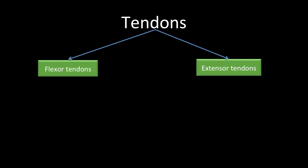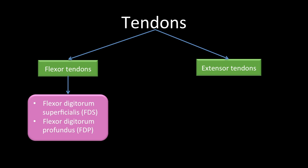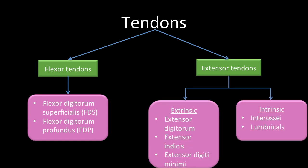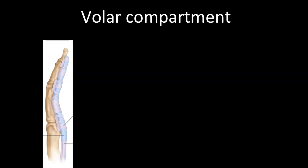Flexor tendons in the volar compartment include two: flexor digitorum superficialis and flexor digitorum profundus. Extensor tendons on the dorsal side are divided into extrinsic tendons — those originating outside the hand such as in the forearm or elbow — and intrinsic tendons originating within the hand. Extrinsic extensors include extensor digitorum, extensor indicis, and extensor digiti minimi. Intrinsic tendons include the interossei and lumbricals. The volar compartment image looks complex, so we'll break down each structure individually.